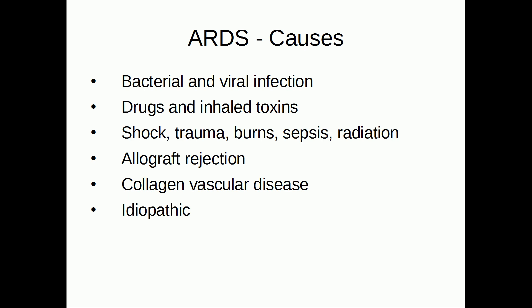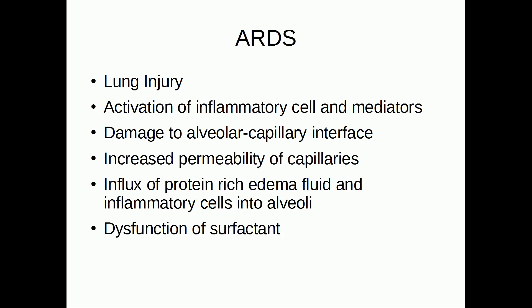Idiopathic cases are also called acute lung injury. The first underlying cause in pathogenesis is lung injury that leads to activation of inflammatory cells and inflammatory mediators. This results in damage to the alveolar capillary interface with increased vascular permeability, so fluid from the capillaries can leak into the interstitial space and also into the alveoli. Together with the fluid, there is also influx of fibrin and erythrocytes, and the fibrin then leads to the formation of hyaline membranes, which leads to atelectasis.